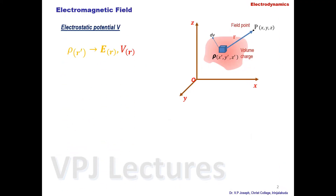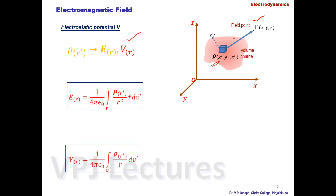Let us refresh our knowledge related to the potential in electrostatics. The point P, where we are interested in finding the electric field, is related to the source term ρ. Here a three-dimensional source ρ is taken as the volume charge density, and the electric field at P is related to ρ and also to the potential V. We first find the potential V, then find the electric field E — that is the usual procedure in electrostatics.